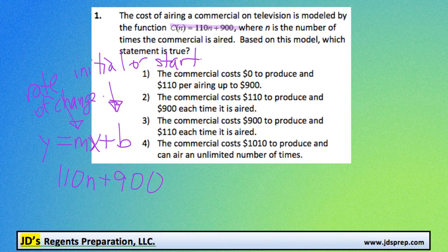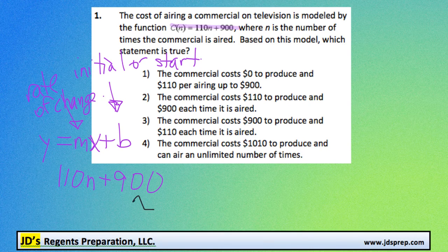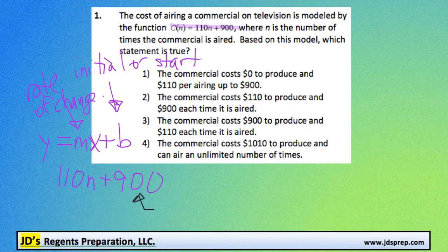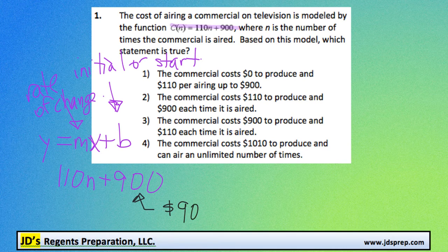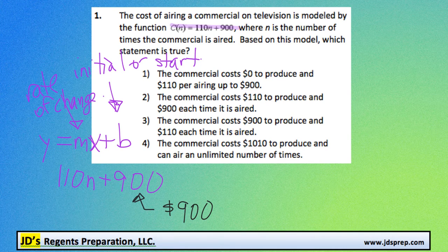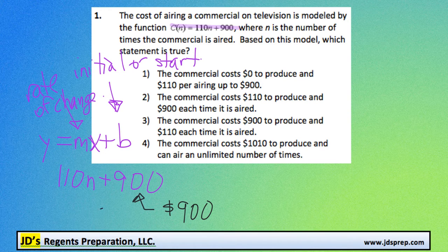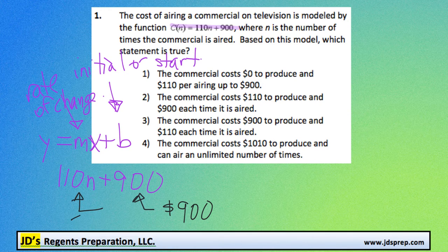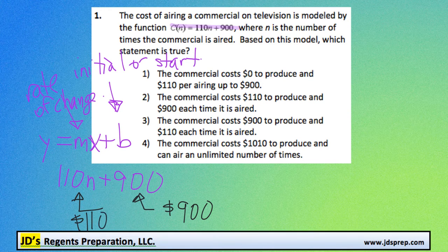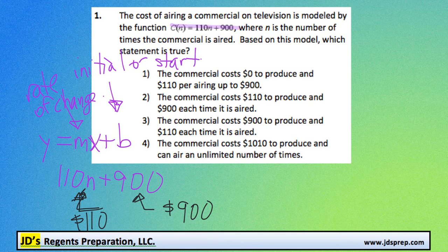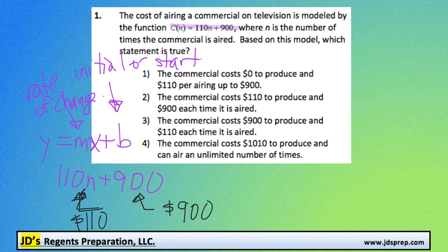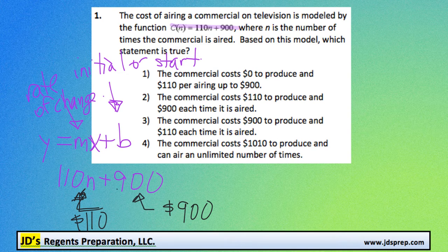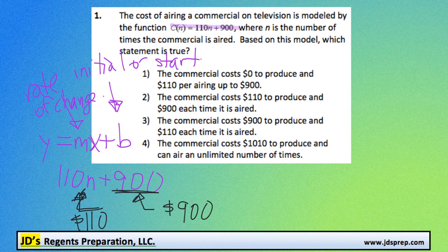So in this situation here, we've got an initial or starting value of 900, and we're talking about dollars. So something is initially going to cost $900, plus there's an extra $110 per n, which represents the number of times the commercial is aired. So what this means is that this company has to pay $900 no matter what.